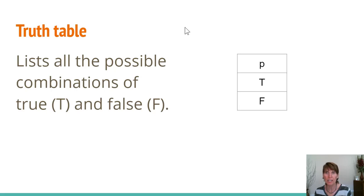One of the tools that we'll be using is a truth table, and these will come in handy in lots of different situations. Truth tables list all the possible combinations of true and false. If we're just working with a single variable, then we only have two options - it can either be true or false. That's the entire combination for a single variable.